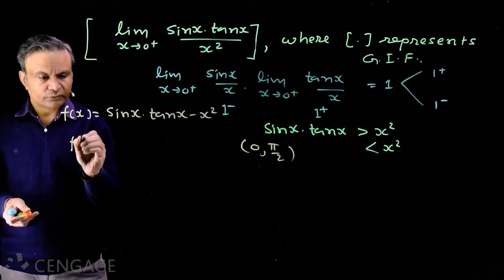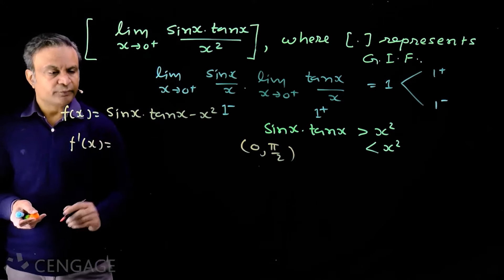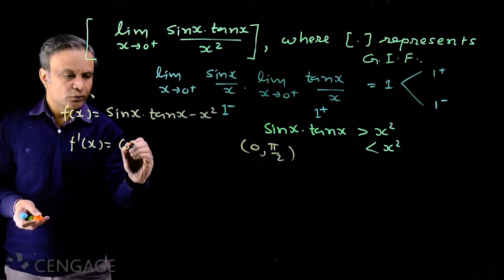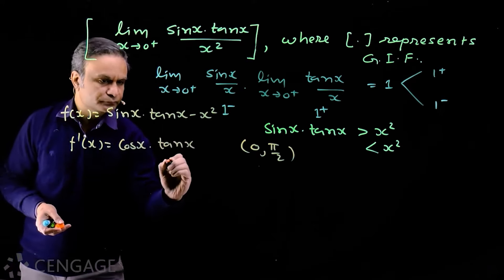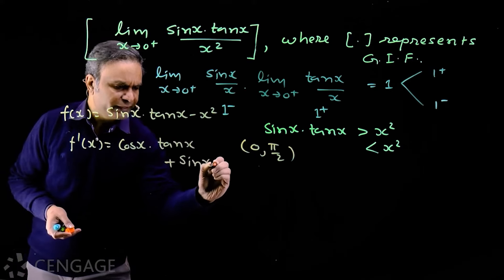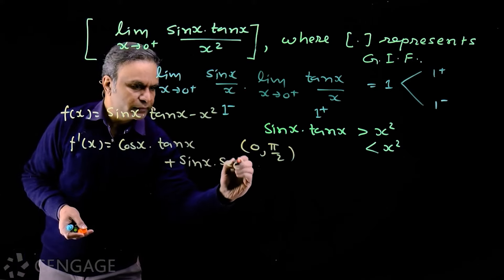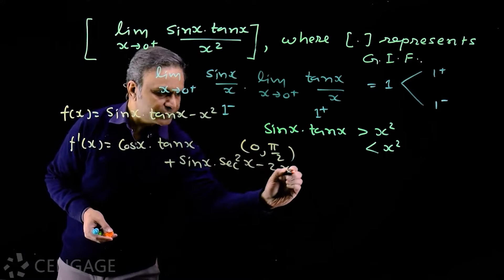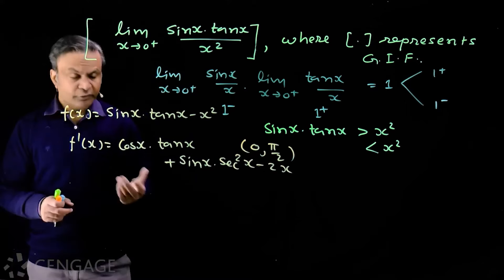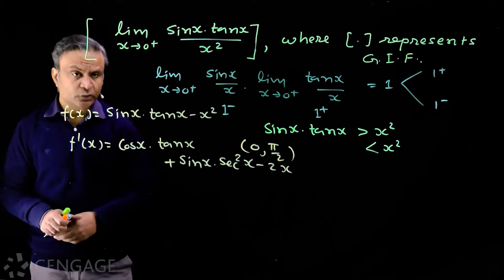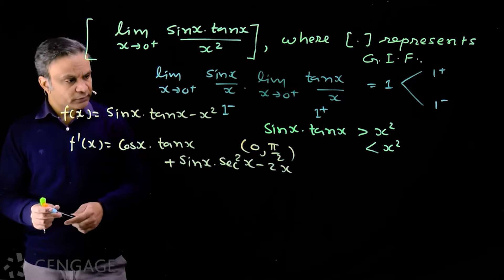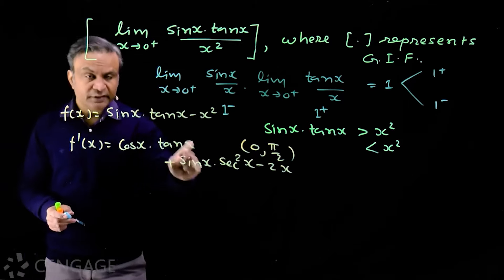For that we differentiate the function. We find f prime x is equal to cos x multiply by tan x plus sin x multiply by sec squared x minus 2x. Now we try to figure out whether this is positive or negative to check the nature of the function. It seems difficult, so what we do, we differentiate this again.